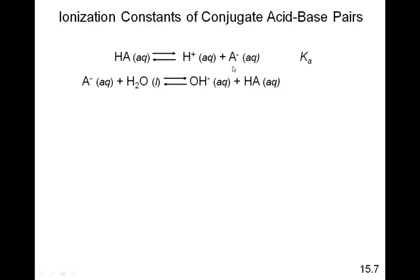Ionization constants of conjugate acid-base pairs. Here's an acid, a generic acid. HA is in equilibrium with H plus and A minus. It's a weak acid. And here's its conjugate base, which, as you saw from the previous chart, depending upon the strength of the acid, the conjugate base is going to have some kind of considerable significant strength so that the conjugate base can actually act like a base in solution. So if we took A minus and put it in water, it's going to act like a base, and it's going to accept a proton from the water molecule to make the OH minus and the HA.